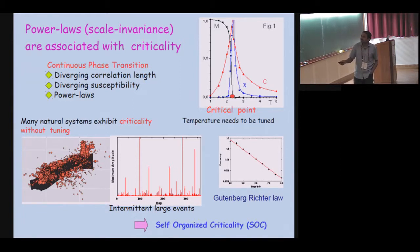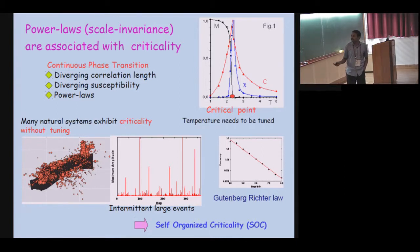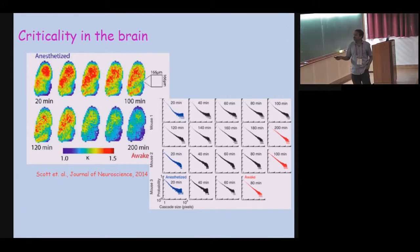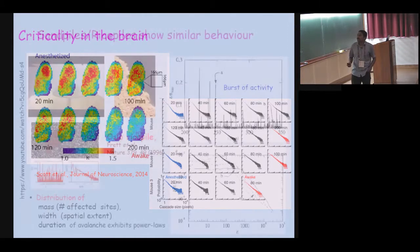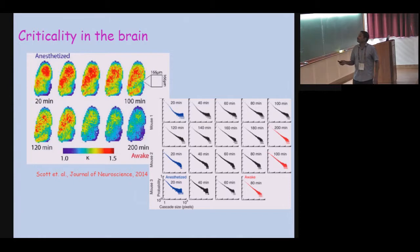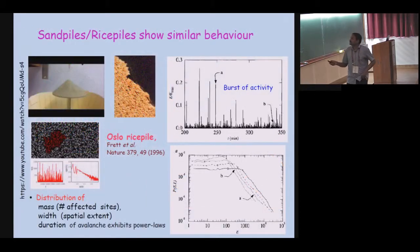One example is earthquakes. If you take the event size and make a histogram, you see a power law — for earthquakes it is called the Gutenberg law. This is what we call self-organized criticality. There are also very interesting cases, for example a mouse which is asleep: when it wakes up, you can see a power law in the activity in the brain. When they wake up, there is a power law there.